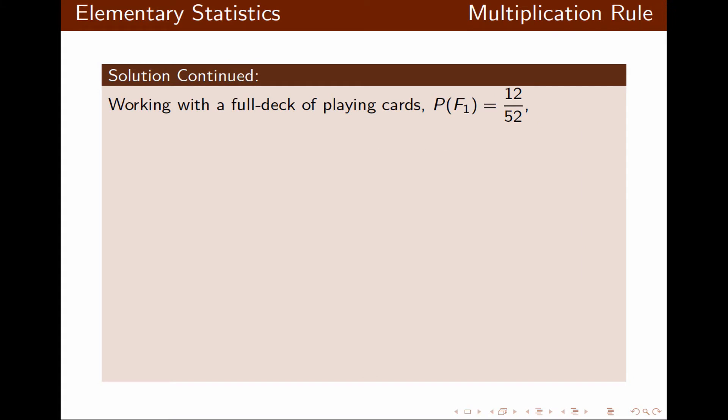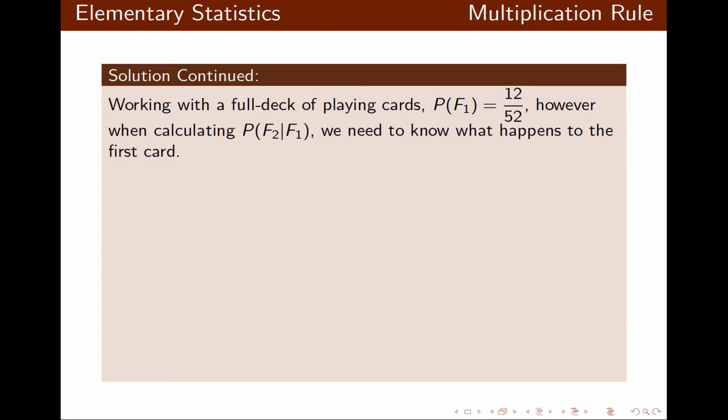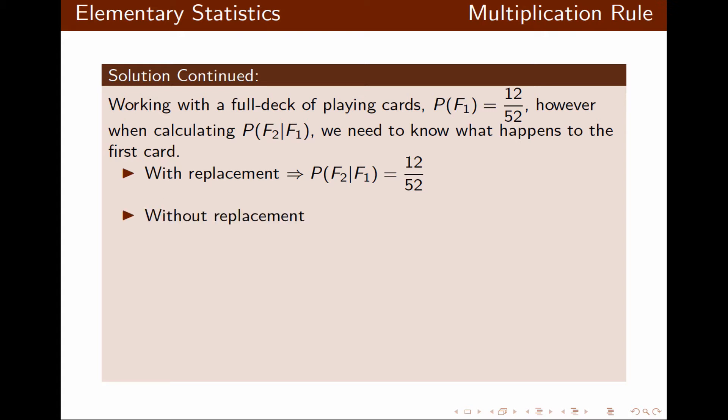The probability that the first card is a face card is simply 12 over 52. Now we need to calculate probability of F2 given that the first card was already a face card. With replacement, probability of F2 given F1 is still 12 over 52. However, without replacement, probability of F2 given F1 is 11 over 51, since one of the face cards is gone.